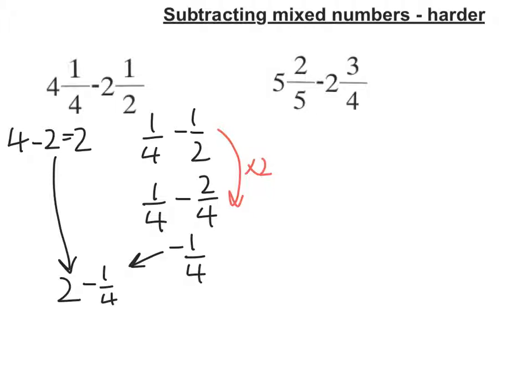So what I need to do is split this 2 into a whole, and with a second whole I'm going to change into quarters. There are 4 quarters in a whole. So I put that down and take away my quarter. So I'm going to have 1 whole, and 4 quarters take away 1 quarter is 3 quarters. So my answer is 1 and 3 quarters.